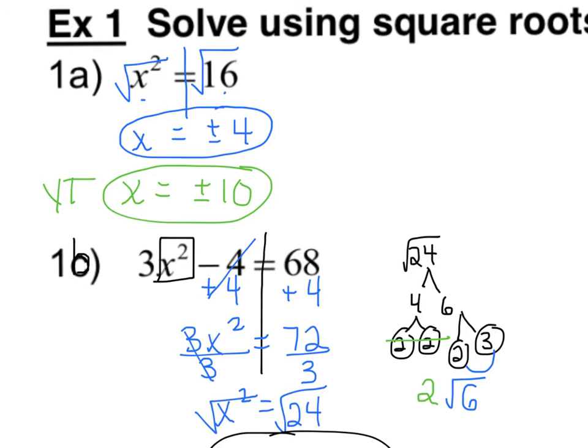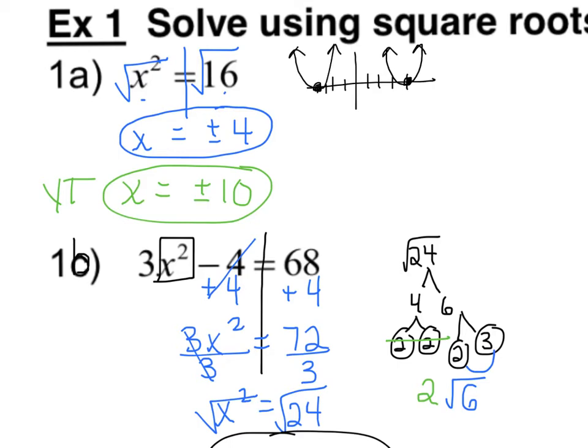I forgot to mention earlier, when you get your two answers, either plus or minus 4, two positive 4's or two negative 4's, it means you have a double root. You have a double root either at positive 4, 4 times 4, or you have a double root at negative 4. And the answer to the you-try on 1c, the answers are 5 and negative 11.